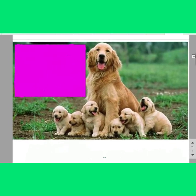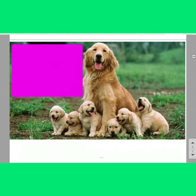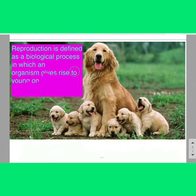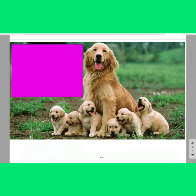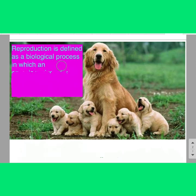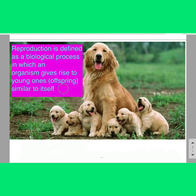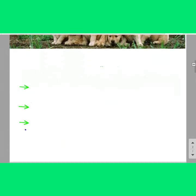First, let us define what is reproduction. Reproduction is a biological process in which an organism gives rise to young ones or offspring similar to itself. Very simple definition.